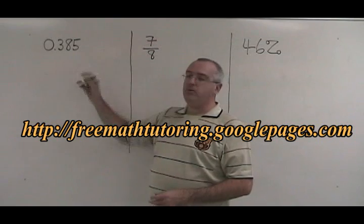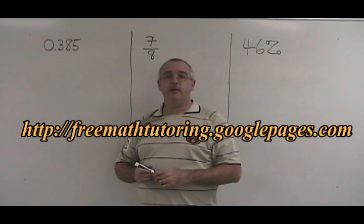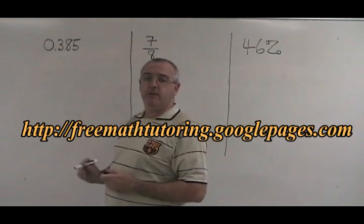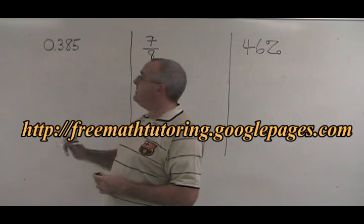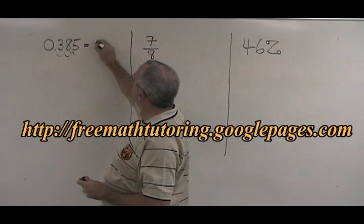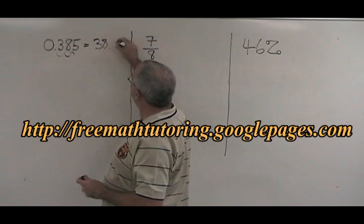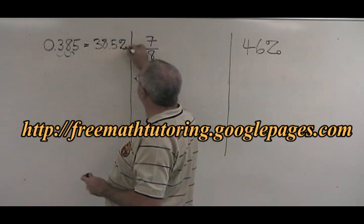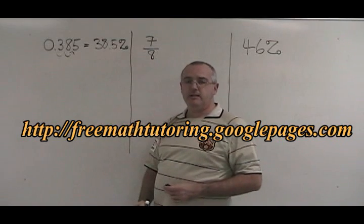Here we have 0.385. To convert it to a percent, we simply move the decimal place two spaces to the right, and it becomes 38.5 percent. Don't forget to write the percent sign.